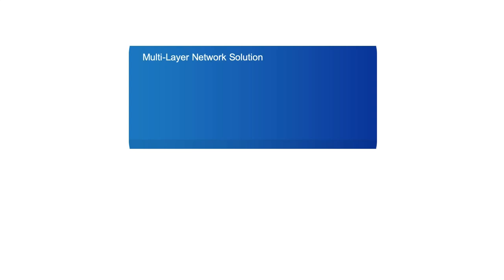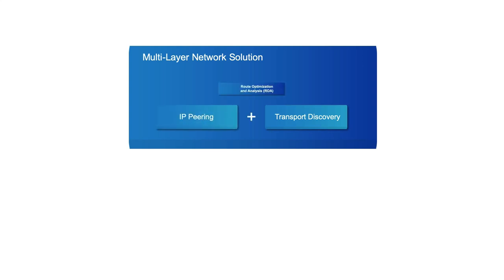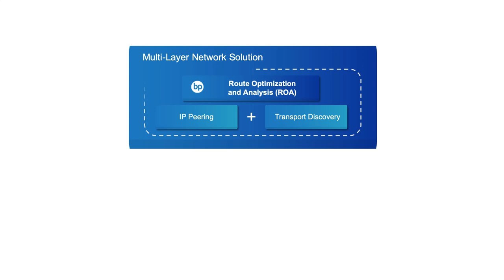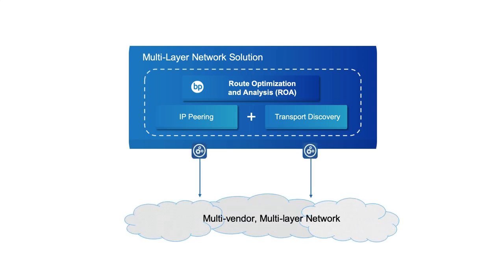To help service providers overcome these challenges, Blue Planet has created an innovative solution to enable streamlined multi-layer network operations. The Route Optimization and Analysis ROA multi-layer network solution makes use of the transport network discovery capabilities of Blue Planet MDSO, alongside the IP peering and network collection layer of ROA, to discover multi-layer networks and integrate them as one consistent network model. The result is one common platform that brings transport network links, dynamic IP MPLS paths, link-by-link performance, customer services and IP flows into one consolidated view.